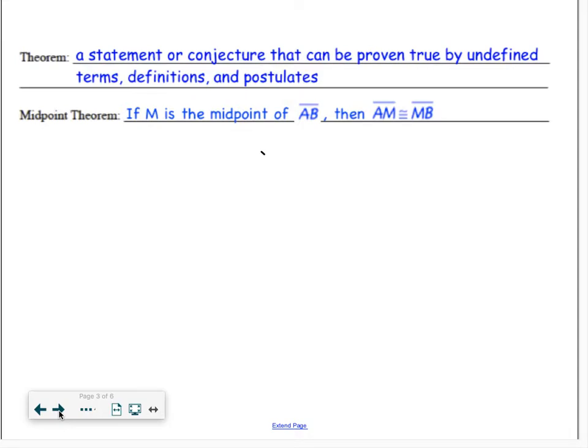When you take postulates and the basic ideas of geometry and you use them to come up with other ideas, some of the more complex ideas in geometry are called theorems. Theorems are ideas, statements, conjectures that do have to be proven among the mathematical community. And we actually will be proving lots of different math ideas just like mathematicians.